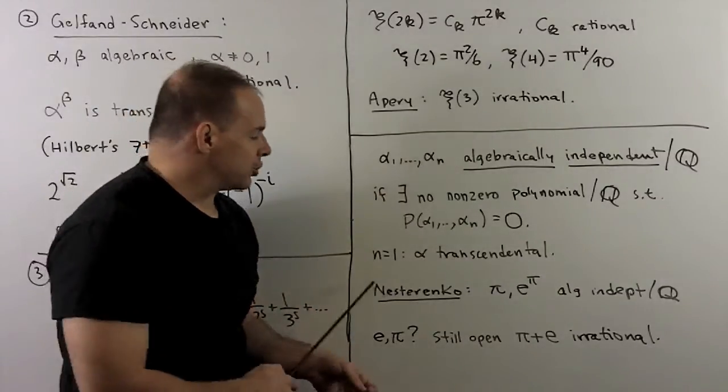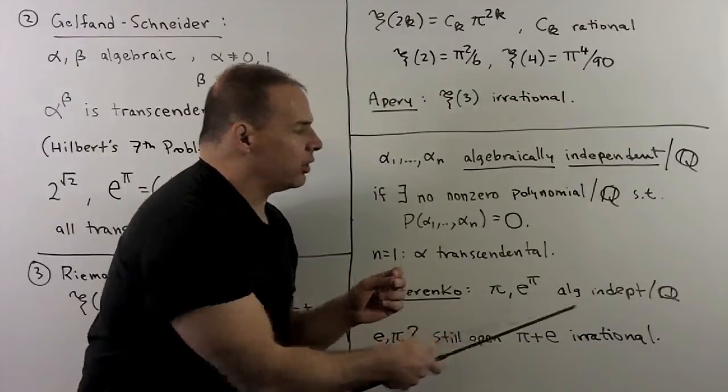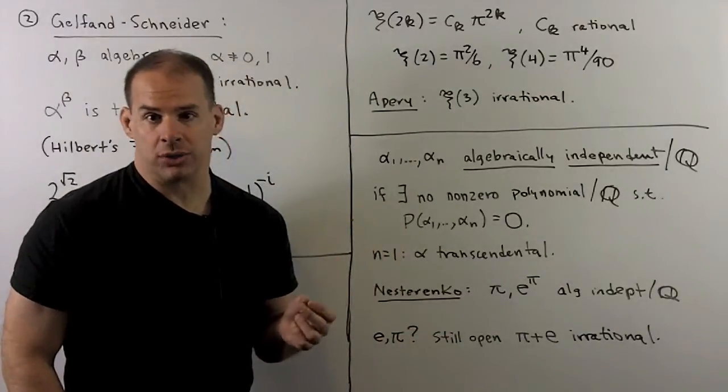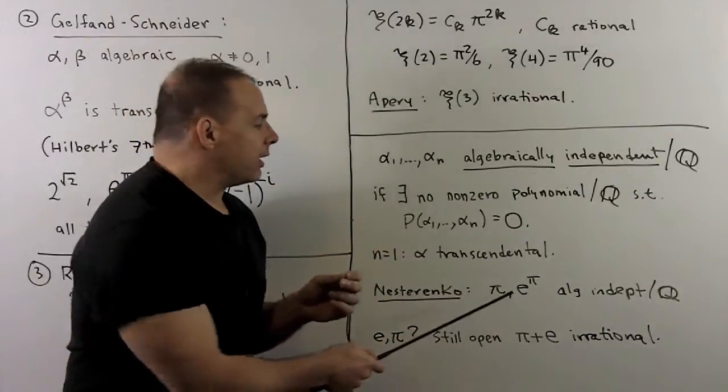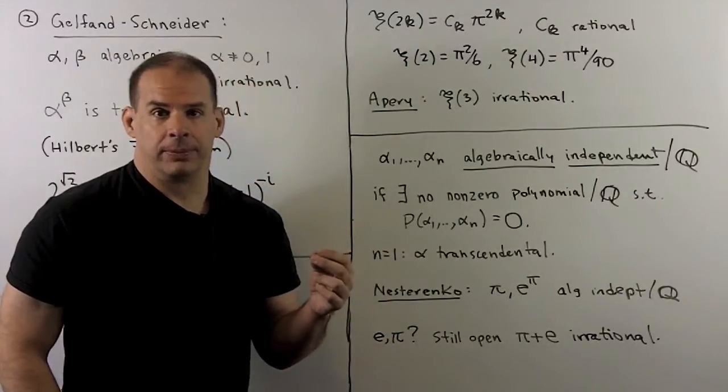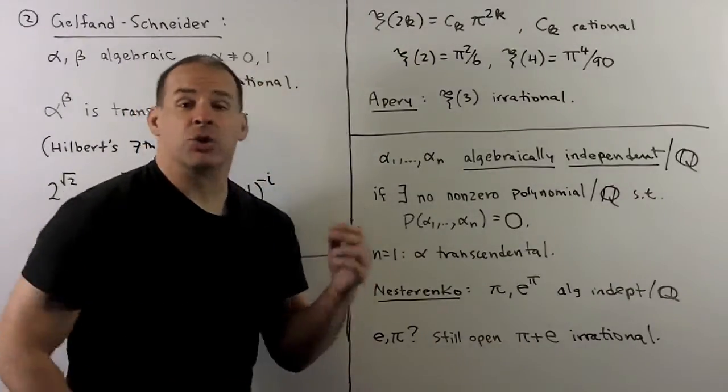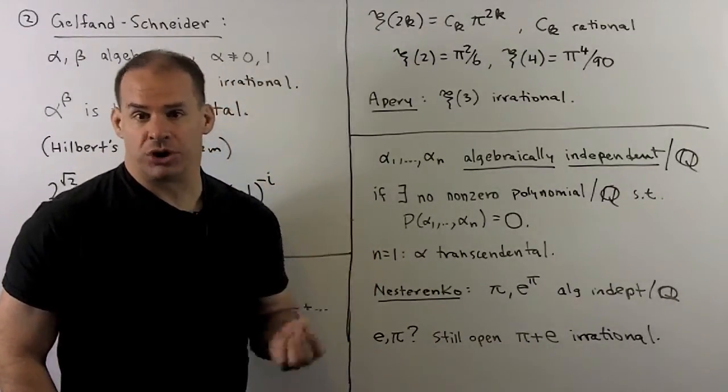Big result here, Nesterenko. We have that pi and e to the pi are algebraically independent over Q, among other results. Now a natural question to ask, how about e and pi? Are they algebraically independent? Still not known whether pi plus e is irrational or not, which would be the first step.